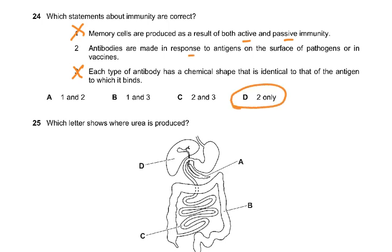Antibodies are made in response to antigens on the surface of a pathogen. On the surface you have an antigen, and then the antibody made by the lymphocytes is complementary to it.